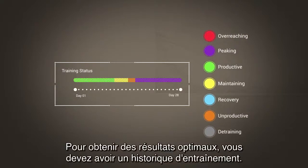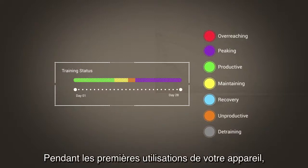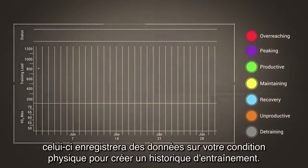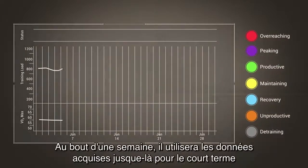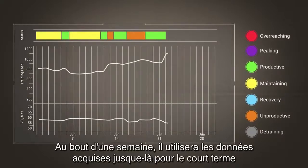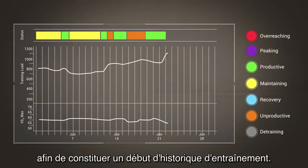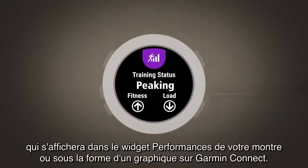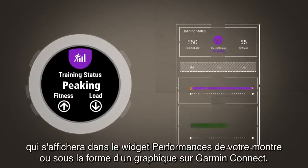Getting optimal results requires some training history. The first several days you use your device, it will be learning your fitness level and beginning to build your training history. After a week, it will use the data acquired thus far for the short-term to project your longer-term training history. By this point, you will begin to see a training status which is shown on your watch on the performance widget and graphed on Garmin Connect.